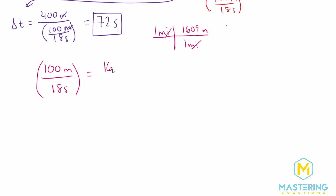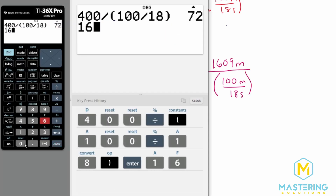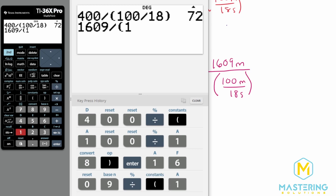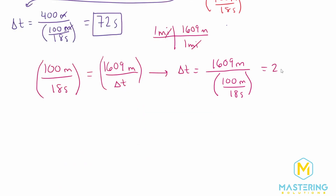We have distance on top — 1,609 meters — divided by delta t. The delta t and this fraction will swap places using the exact same steps as before. So delta t equals 1,609 meters divided by 100 meters over 18 seconds. That is 1,609 divided by 100, times 18, which gives us 289.6 — we'll round that to 290 seconds.